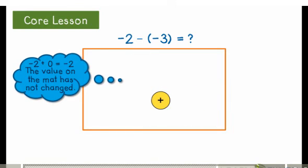Now I am able to subtract negative 3, and I'm left with a value of positive 1. Negative 2 minus negative 3 equals positive 1.